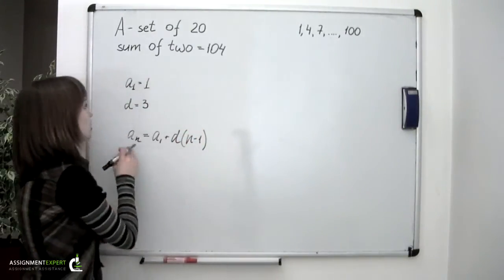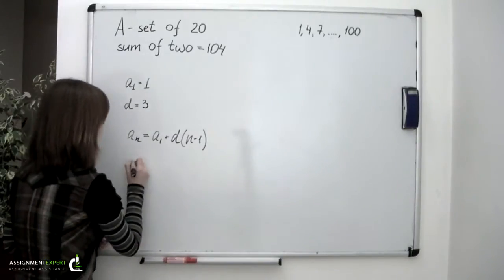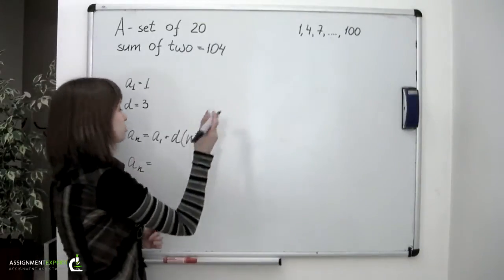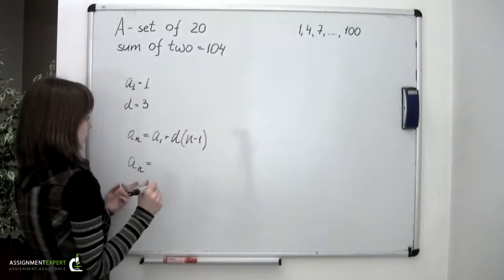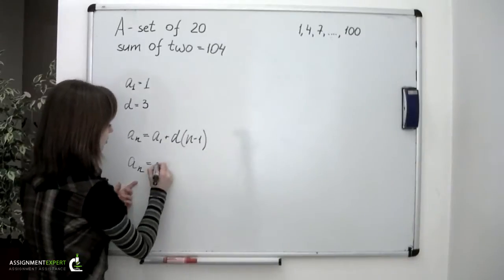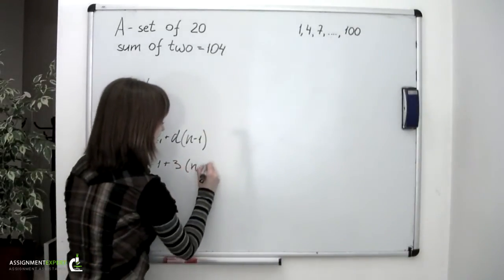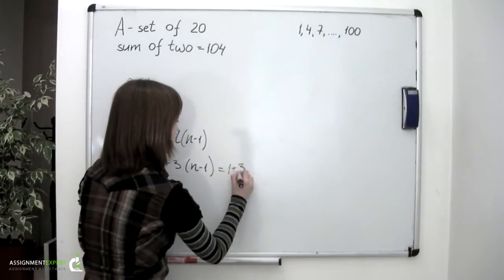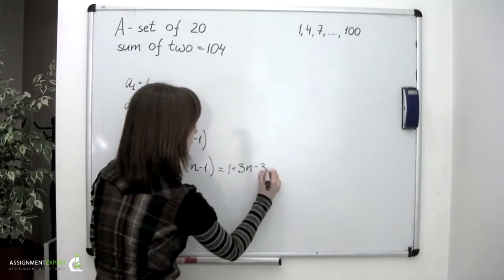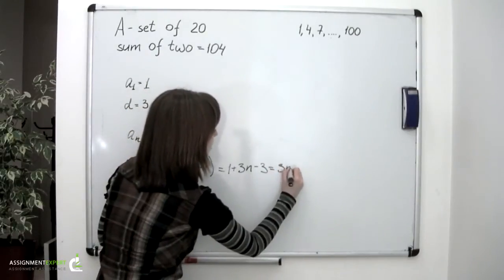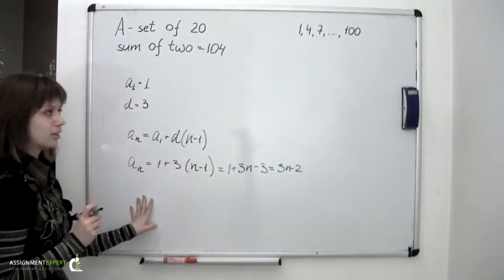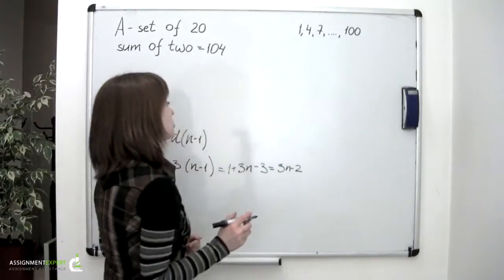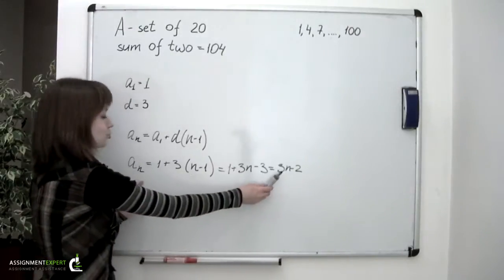So, knowing the first term and the difference, we can work out the expression for the nth term of our progression. We get 1 plus 3 times n minus 1, or 1 plus 3n minus 3, which is 3n minus 2. Any term of our progression can be found by substituting n into this expression.